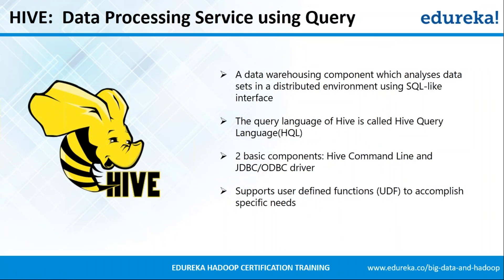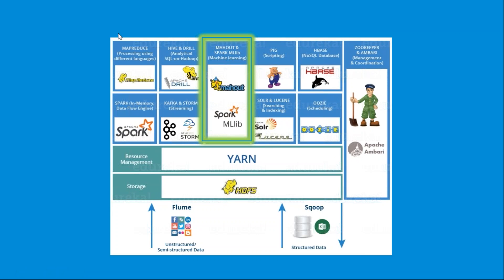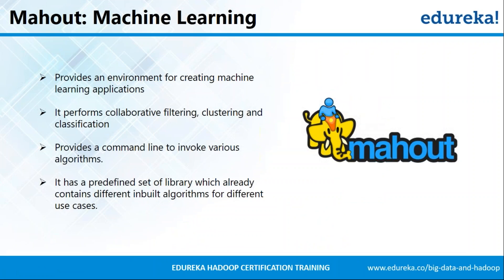Next we look at Mahout and Spark MLlib. Mahout is a machine learning library written in Java. It can be used for creating recommendation engines, clustering data, or classifying data into various groups. All machine learning algorithms can be implemented over big data using Mahout. It provides a command line interface. Market basket analysis can be easily executed using Mahout over big data. Recommendation engines — like those you see on Amazon or Flipkart — can also be built using Mahout.